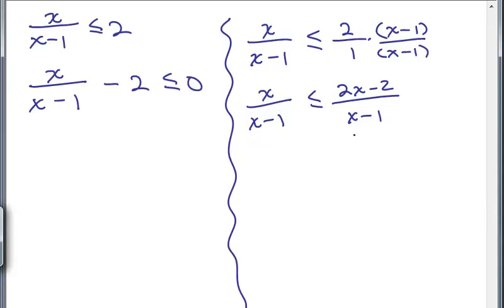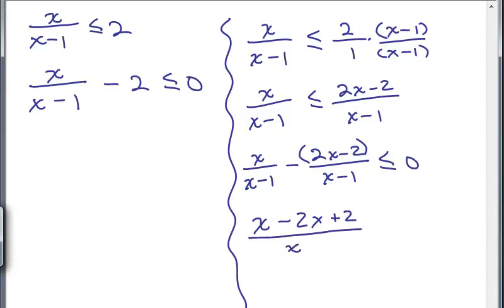Now I need to write this with a zero on one side. It doesn't matter if you put the zero on the left side or the right side. Most people are used to putting it on the right side so I'm going to do it that way. We've got to be careful, we're subtracting 2x minus 2 over x minus 1 from both sides and don't forget you have to distribute that minus sign through that whole numerator. So that numerator will become x minus 2x plus 2 when you distribute your minus sign. All over x minus 1.